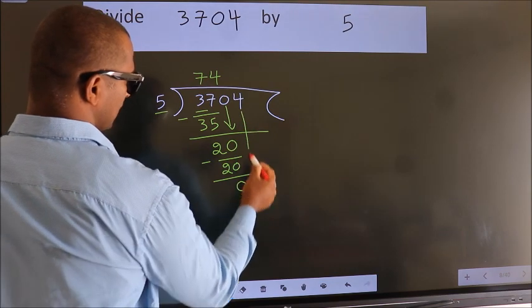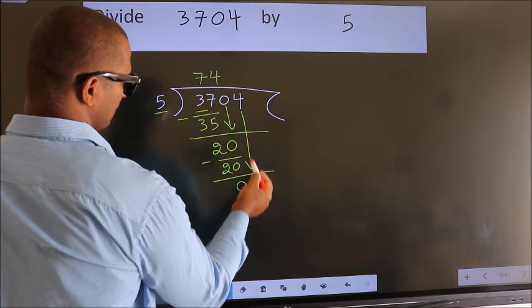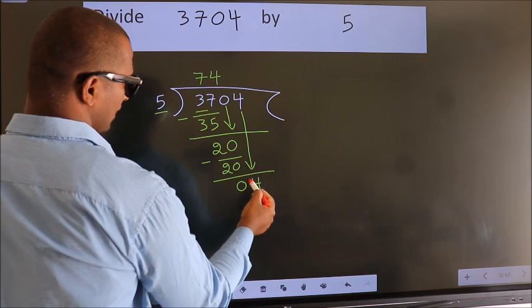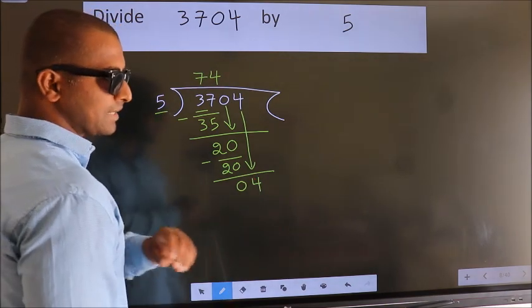After this, bring down the beside number. So 4 down. After this step, the mistake happens.